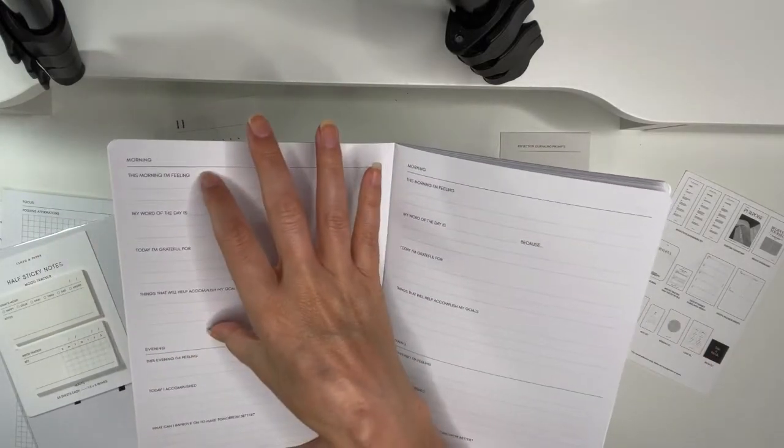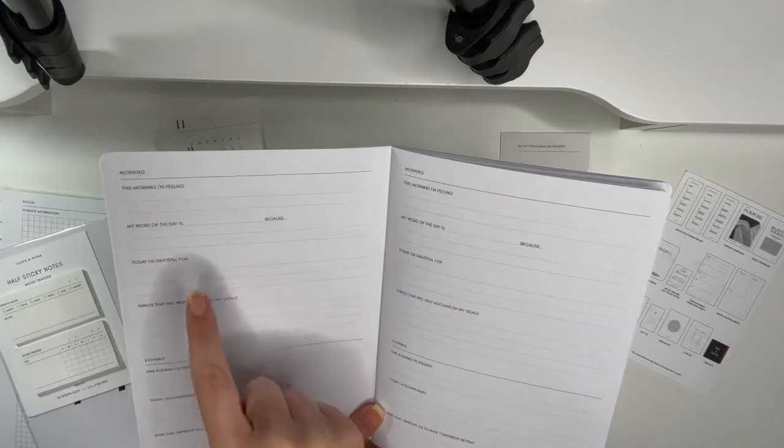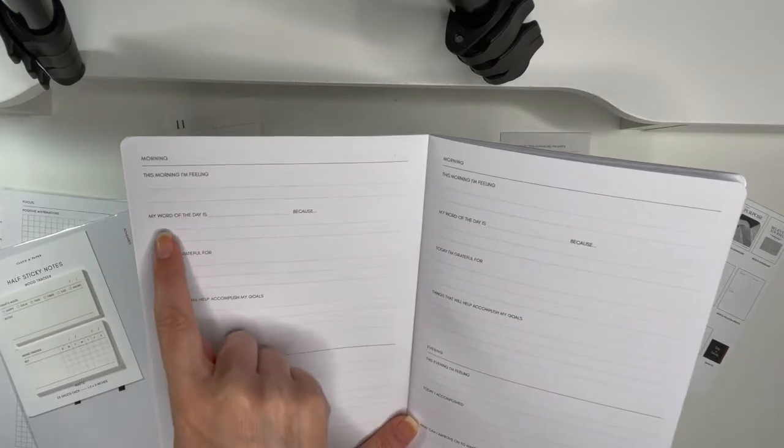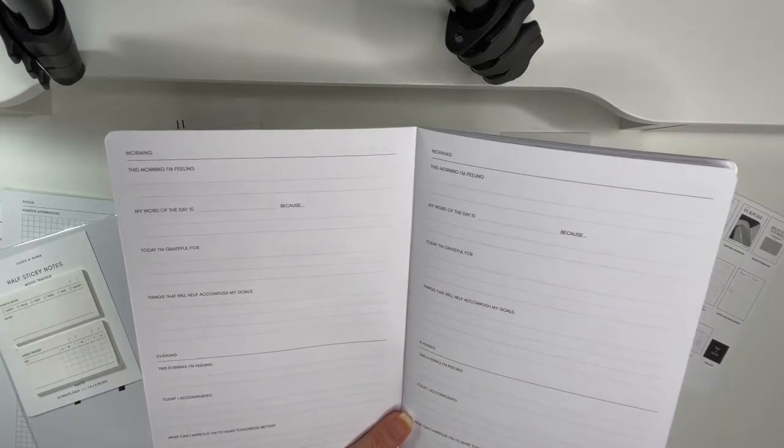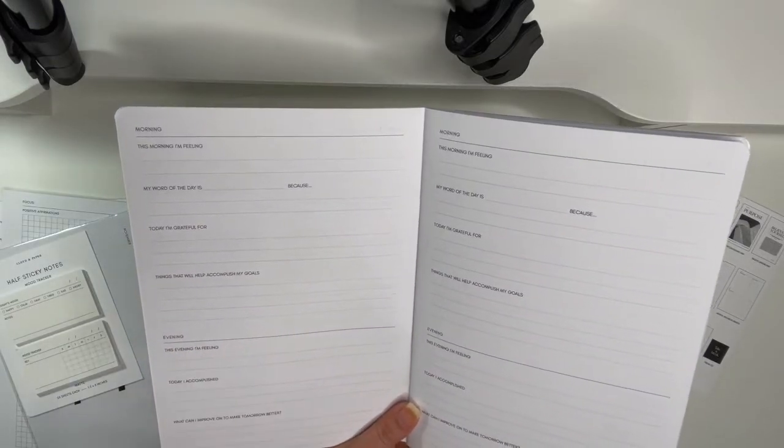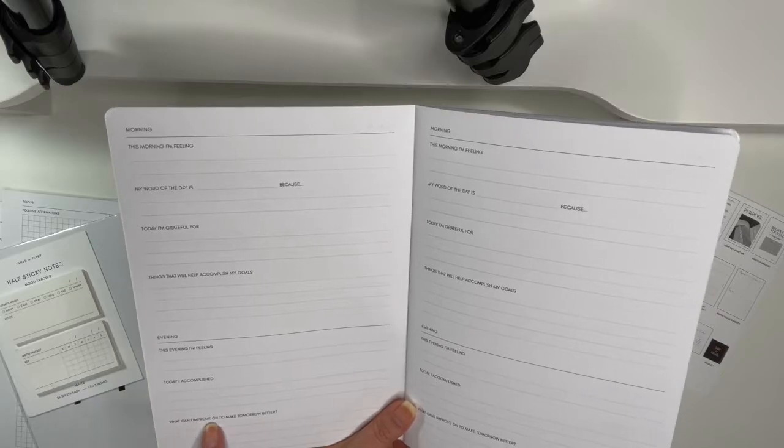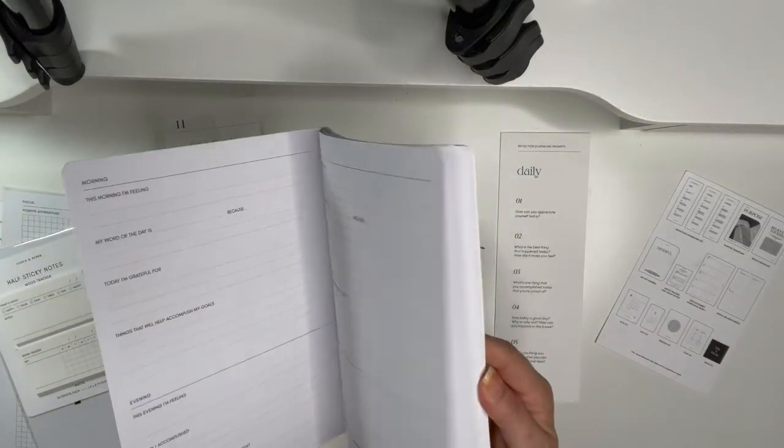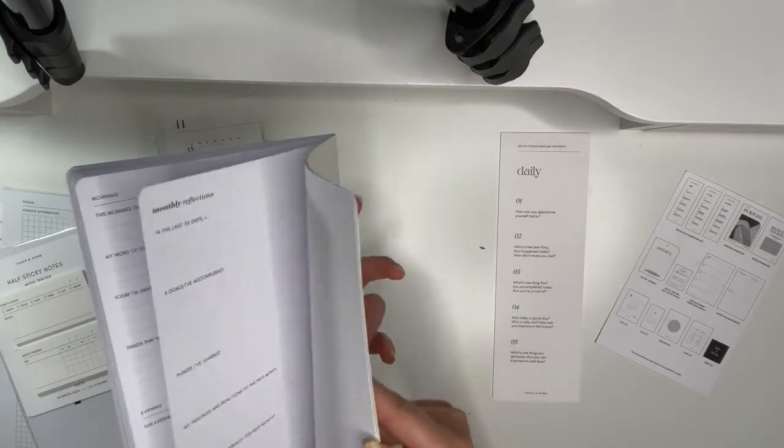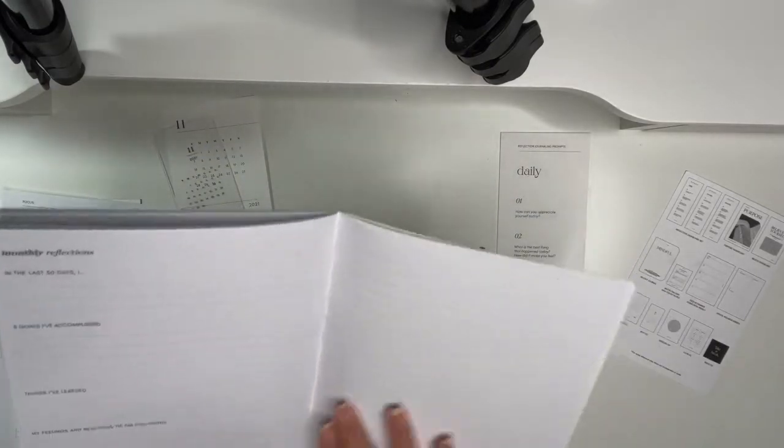So you've got your morning on the top and your evening down below. Morning: this morning I am feeling, my word of the day is, today I'm grateful for, and things that will help me accomplish my goals. In the evening: this evening I'm feeling, today I accomplished, what can I improve on to make tomorrow better. And there you go, you have enough for the whole month and then there's a notes page.